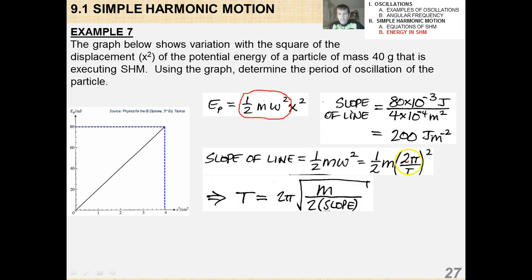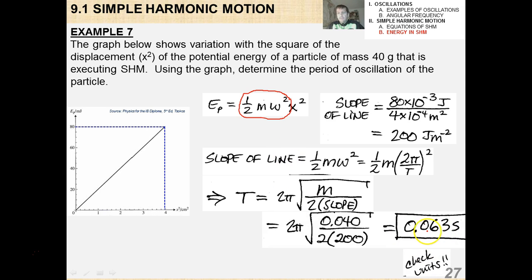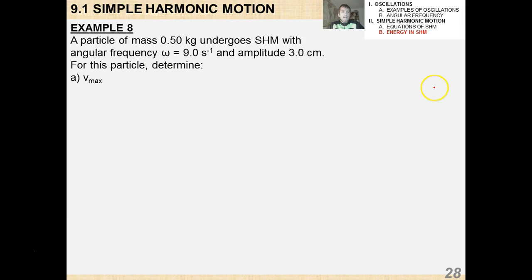And the slope of the line is 200 joules per square meter. All right, then all you do is you just extract capital T, or the period of oscillation, out of that slope, and you get that it's 0.063 seconds. So that's how we would use these equations to deduce some physical information from the mathematical models.